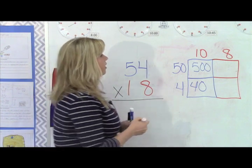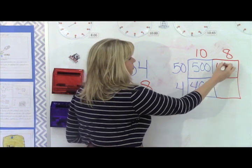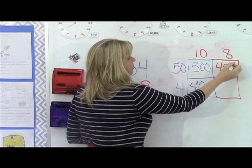Then I come over here, and I'm going to do five times eight, which I know is 40. And I'm going to add my one zero.